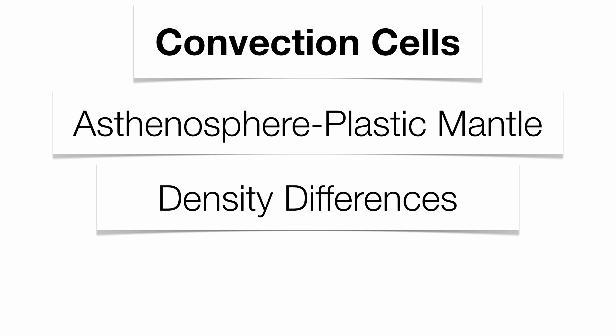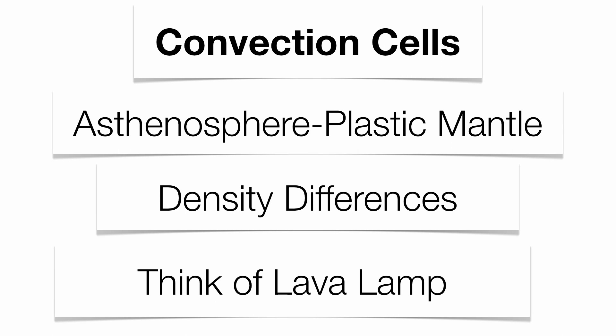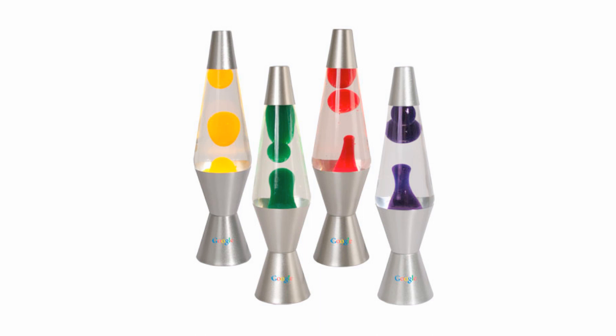Because the Earth gets much hotter as you go deeper, the asthenosphere is influenced by temperature — if the temperature changes, the density changes as well. Think of a lava lamp: the light bulb at the bottom heats the wax, the molecules expand, density decreases, and the wax rises. When the wax hits the top it cools off, molecules contract, density increases, and the wax sinks — creating a constant rising and sinking motion.